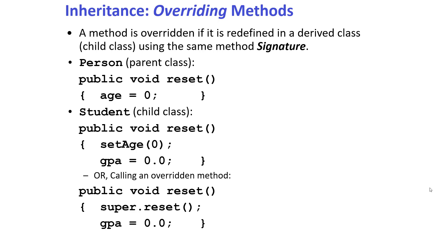We've already seen overriding. Overriding happens when you have the same method signature in the child class as you have in the parent class. So if you have a method written in the parent class and you write the same kind of method in the child class with the same signature, then this is called overriding the method.